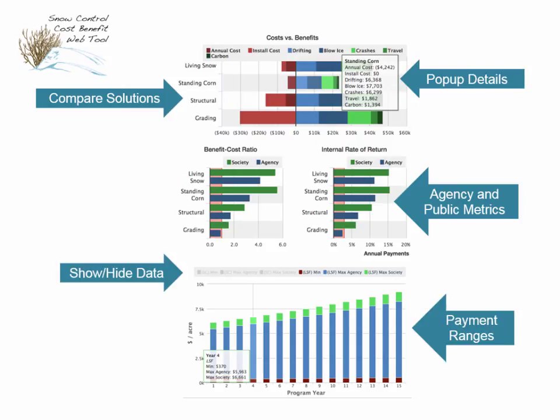We give some information to the agency about payment ranges — what should be the minimum payment for the landowner to break even, and what should be the maximum payment so the agency can still see cost savings. We give them a range of payments. We don't tell them what the payment should be — that's a negotiation between the agency and the landowner.